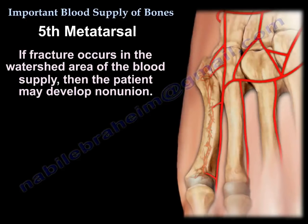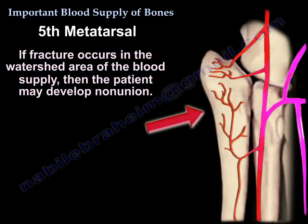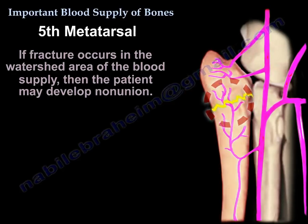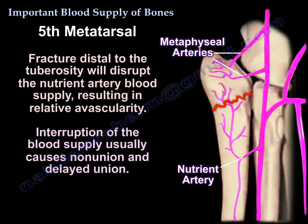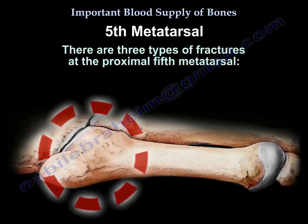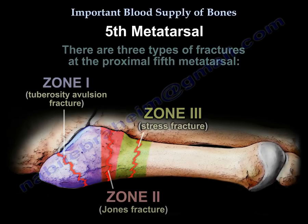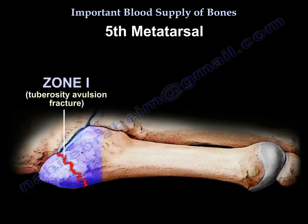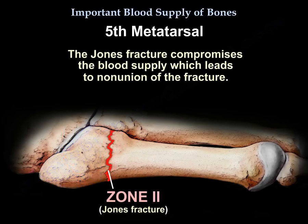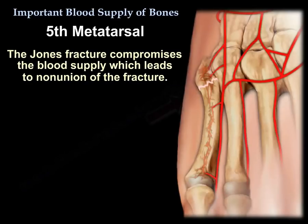If the fracture occurs in the watershed area of the blood supply, the patient may develop non-union. A fracture distal to the tuberosity will disrupt the nutrient artery blood supply, resulting in relative avascularity. Interruption of the blood supply usually causes non-union and delayed union. There are three types of fractures at the proximal fifth metatarsal: zone one is a tuberosity avulsion fracture, and zone two is the Jones fracture, which compromises the blood supply and leads to non-union.